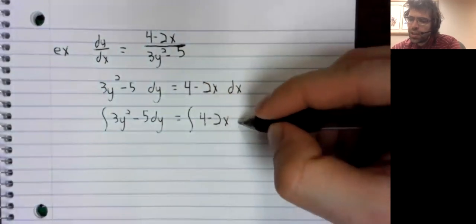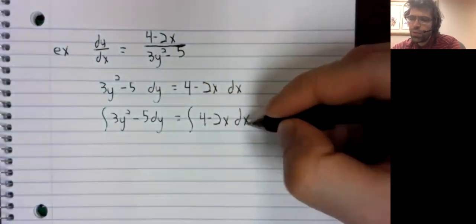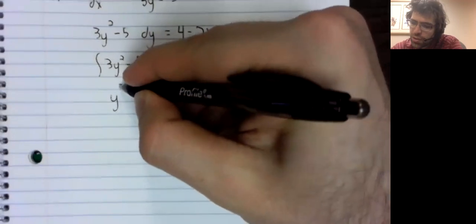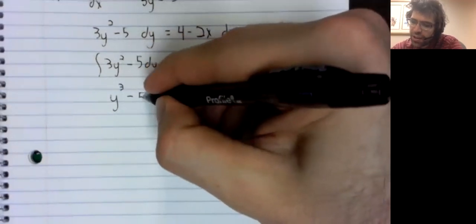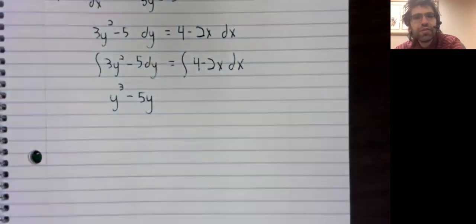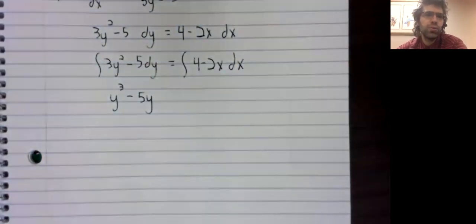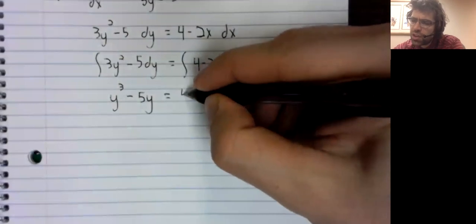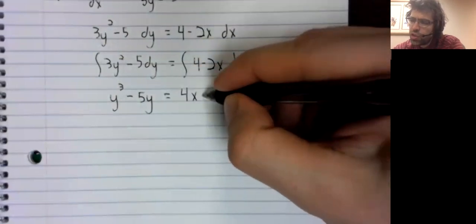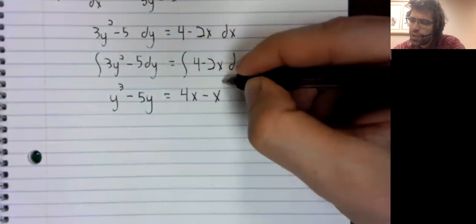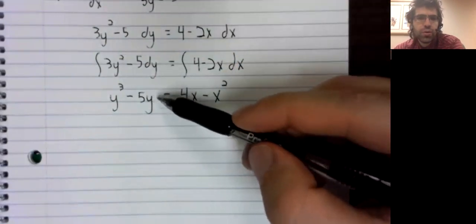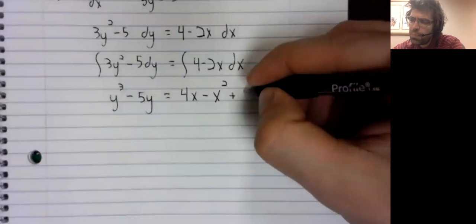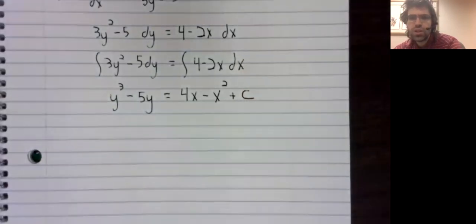I mentioned the word implicit earlier — let's come back to that. If we integrate the left-hand side, we get y cubed minus 5y. We also get a constant of integration on each side, but we can combine those constants.